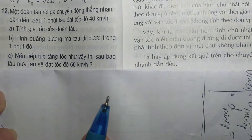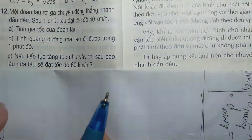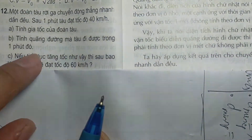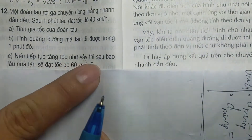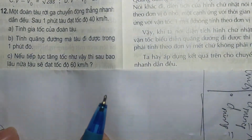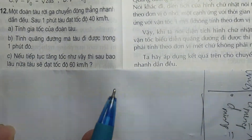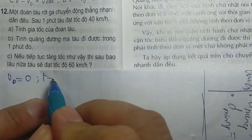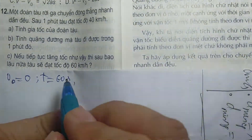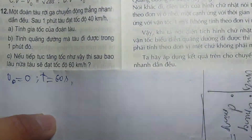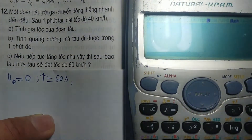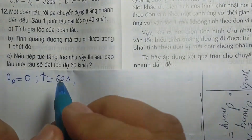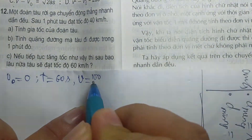Câu 12: Một đoàn tàu rời ga, chuyển động thẳng nhanh dần điều. Sau một phút tàu đạt tốc độ 40 km/h. A: Tính gia tốc của đoàn tàu. B: Tính quãng đường tàu đi được trong một phút đó. C: Nếu tiếp tục tăng tốc như vậy, thì sau bao lâu nữa tàu đạt tốc độ 60 km/h? Dữ kiện: V0 bằng 0 (rời ga), T bằng 60 giây, V bằng 40 km/h chia 3,6 bằng 100/9 m/s.